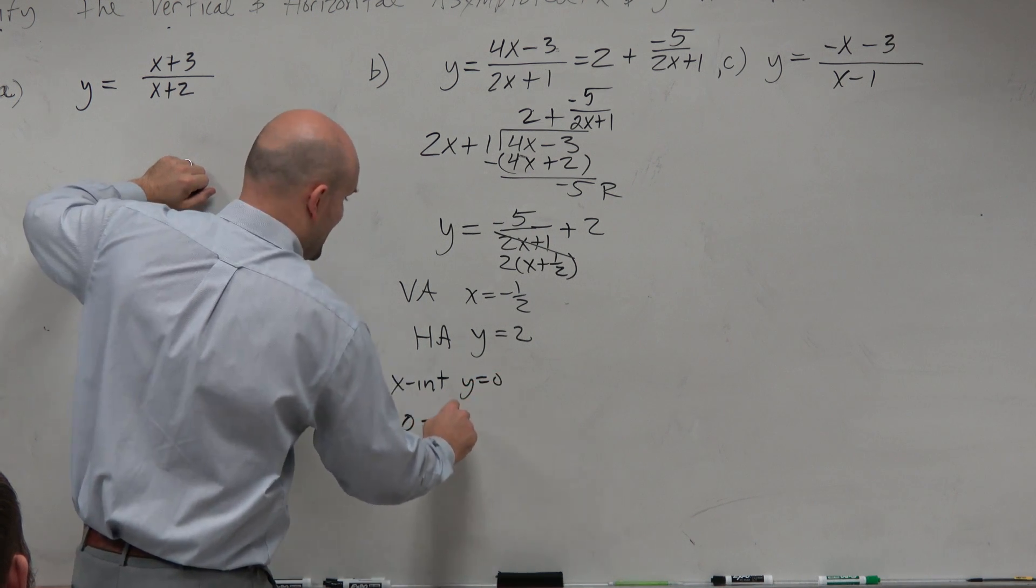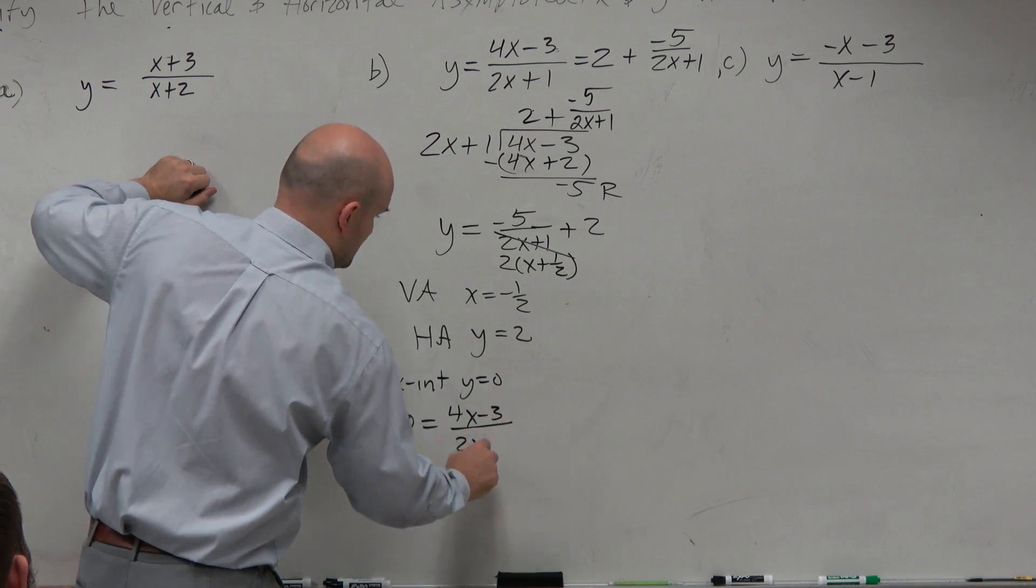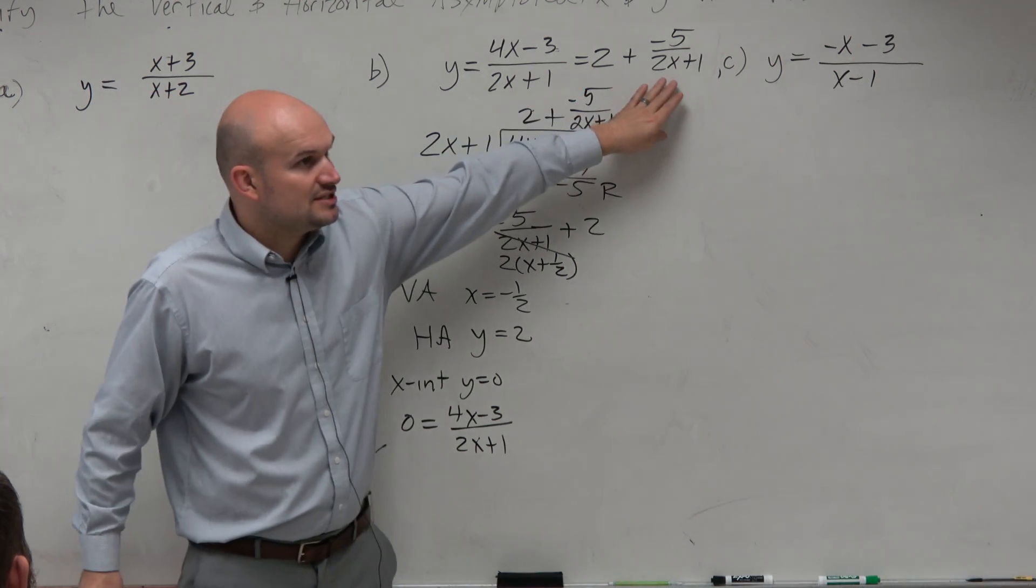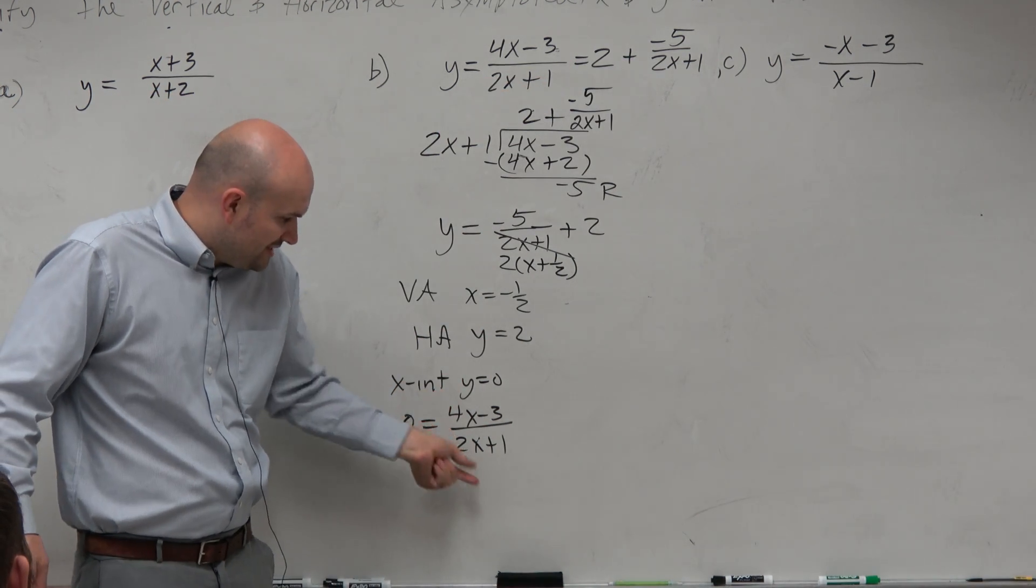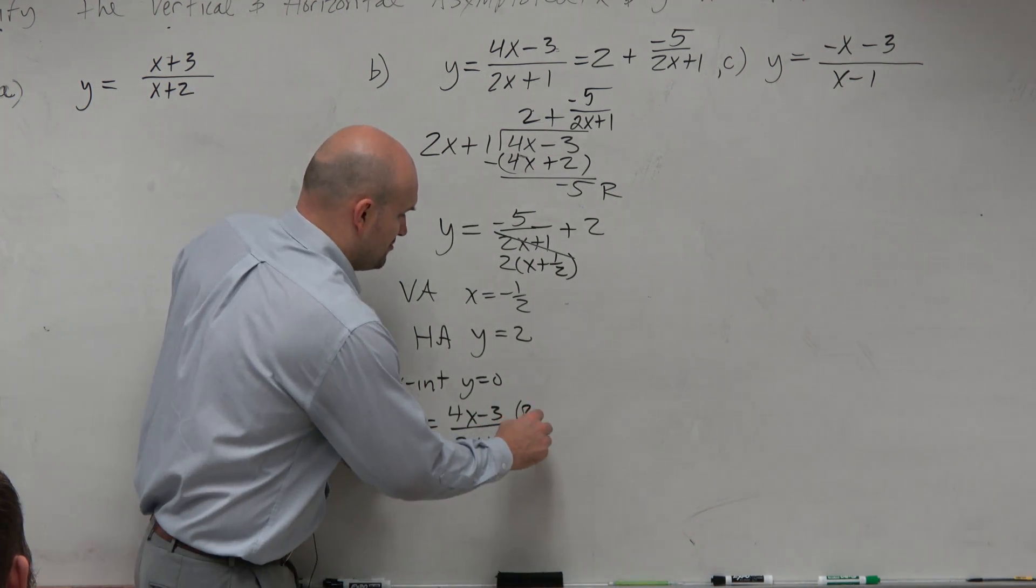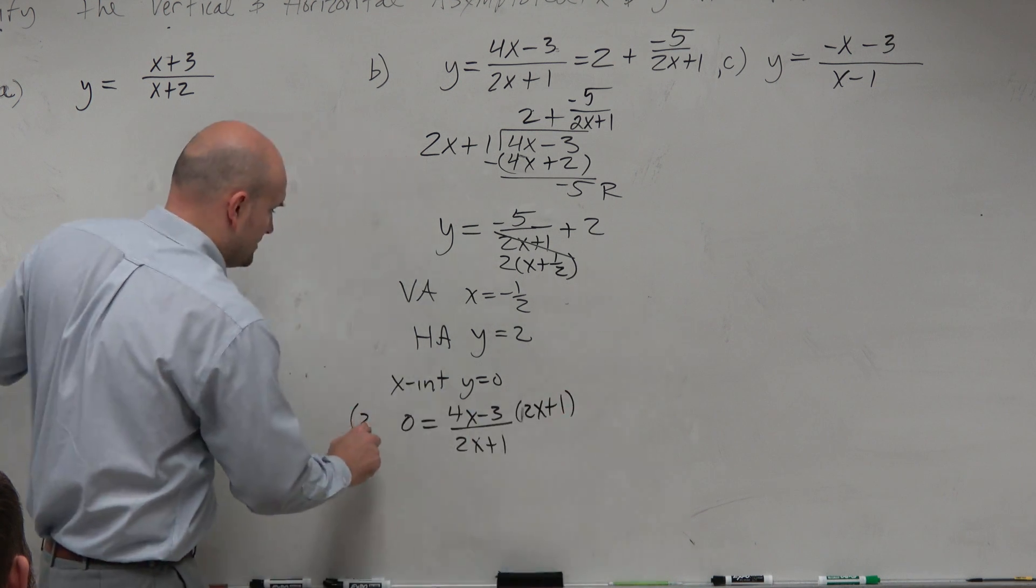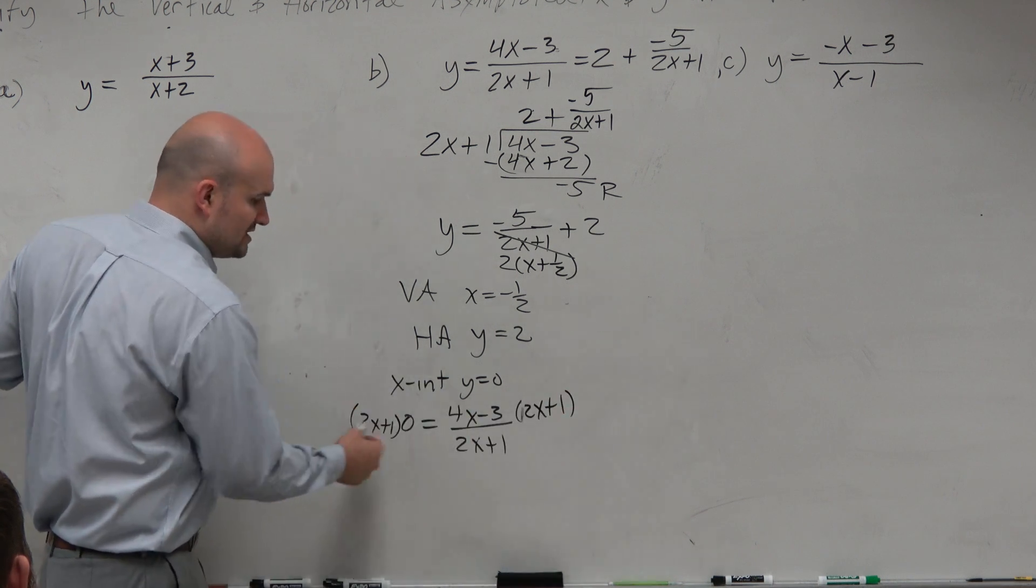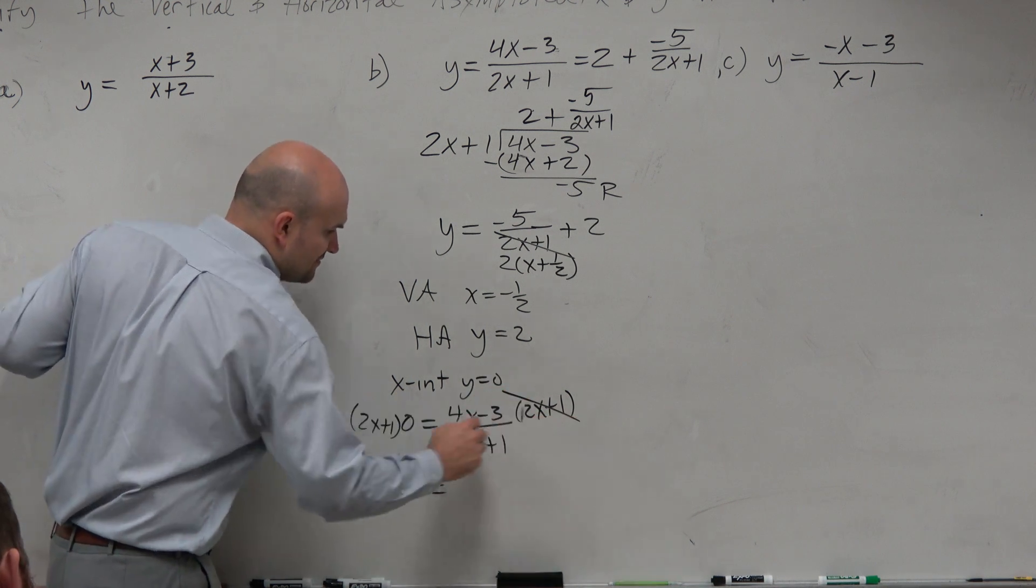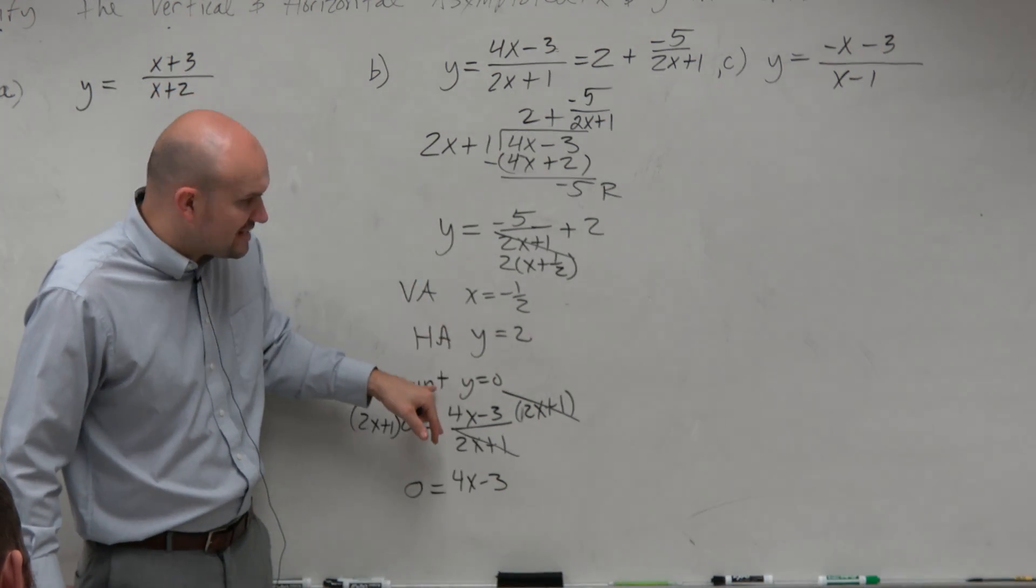So again, instead of using this equation, we can just use this one. If I have a rational expression equal to 0, I need to get this off the denominator. So you multiply on both sides. Anything multiplied by 0 is just 0. And this divides to 1. So guess what? Every single time you're trying to find the x-intercept, you're setting y equals 0.